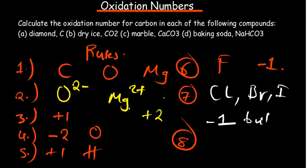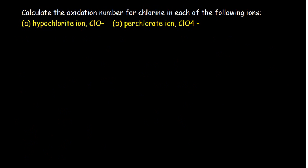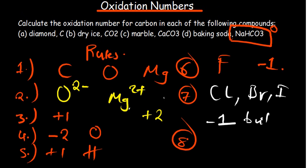Rule eight: the total oxidation number of a neutral compound is zero — the sum of all oxidation numbers equals zero since there is no charge. Rule nine: the total oxidation number of elements in a polyatomic ion will sum to equal the charge on the polyatomic ion. With these rules, we are able to answer all the questions.